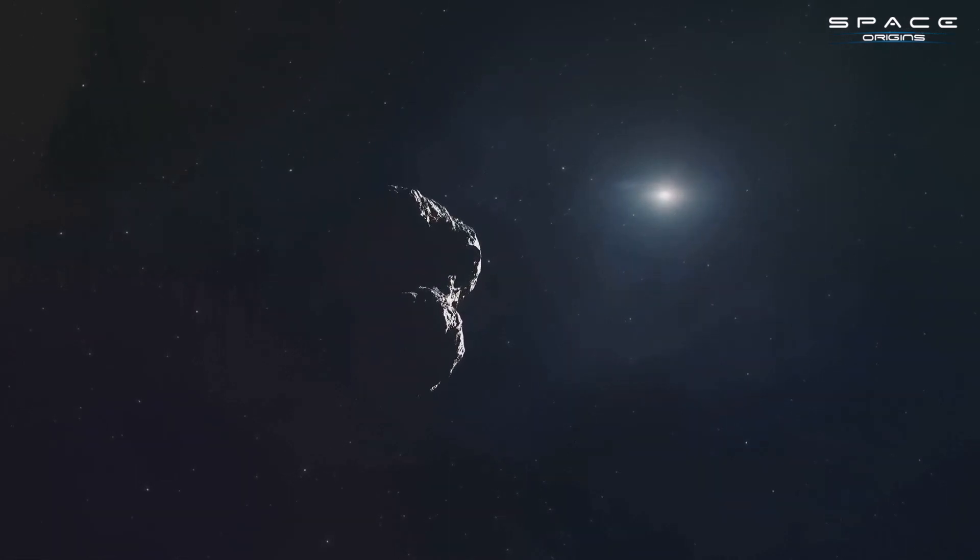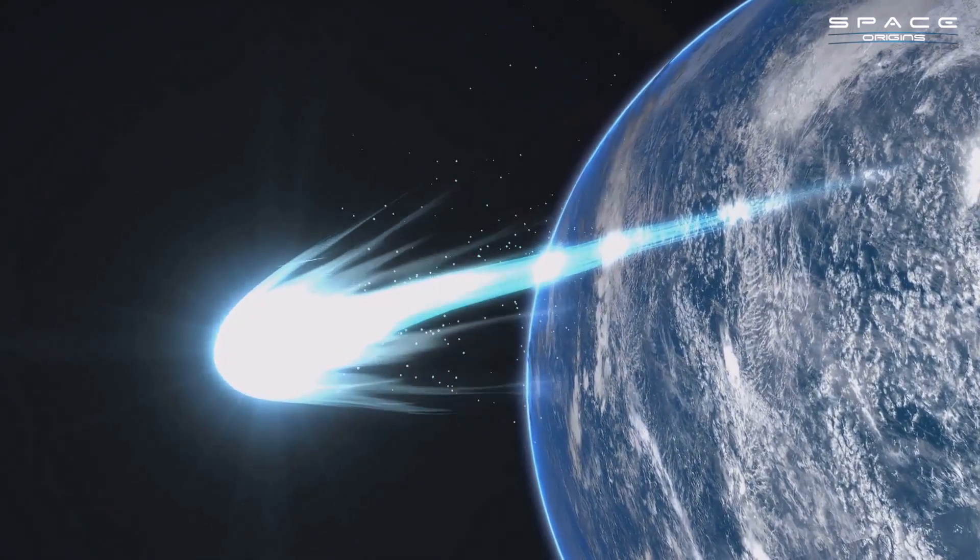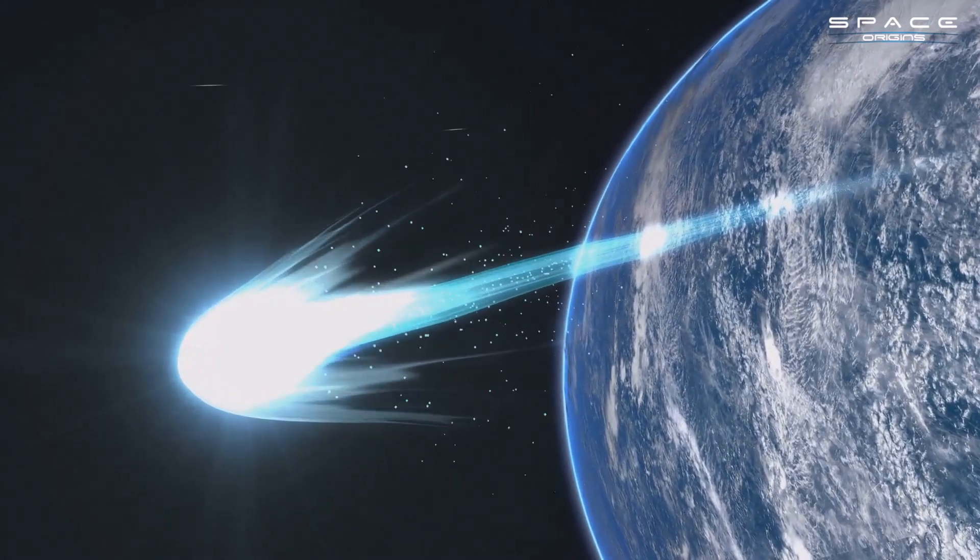Some asteroids, known as Atens, are particularly hard to spot. Their orbits bring them close to Earth, but they spend a significant portion of their time in the sunlit sky.